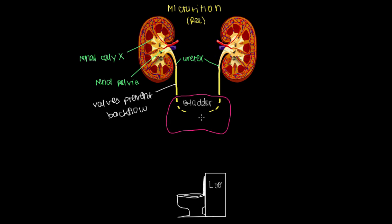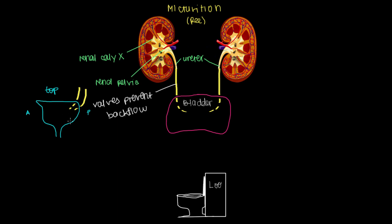You can see the bladder from the front, but it's useful to look at it from the side as well. From the side, with top, bottom, anterior, and posterior orientations, the bladder has a top that spins down, a pointy front part, and collects at the base. The ureters conduct urine to the back — the posterior aspect — of the bladder.